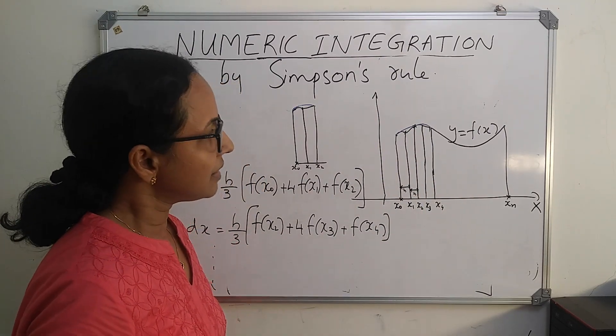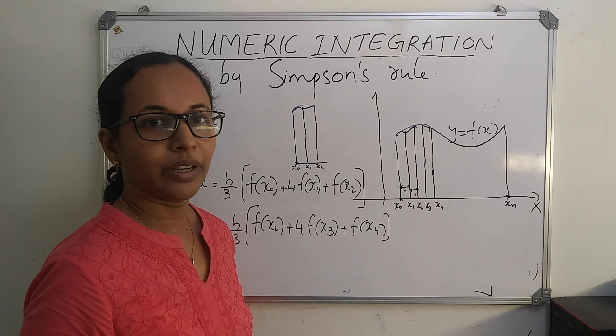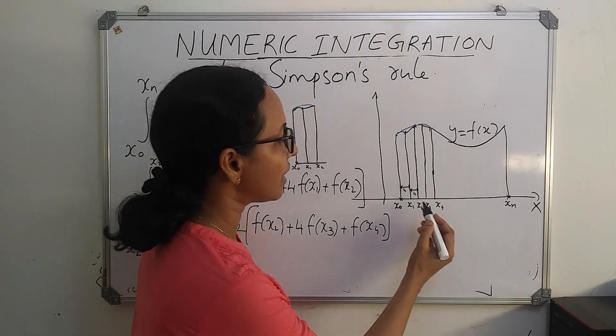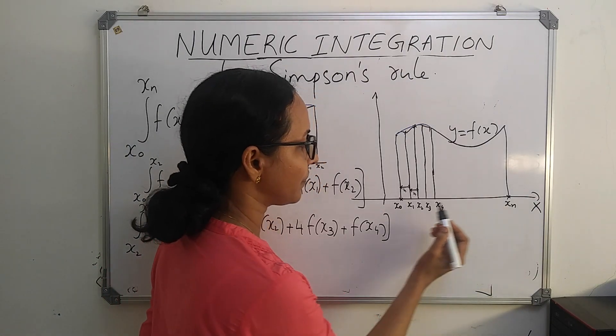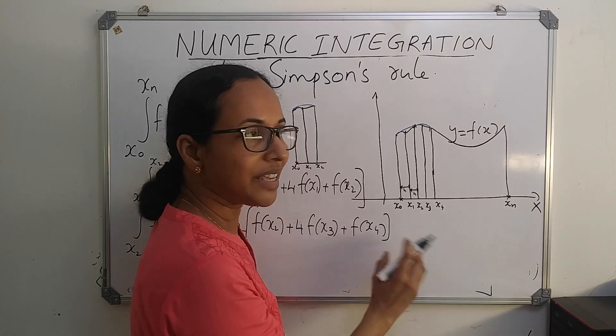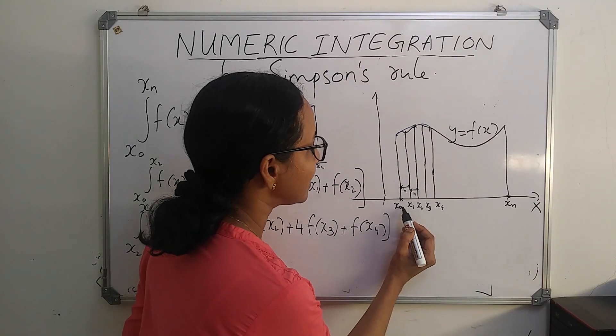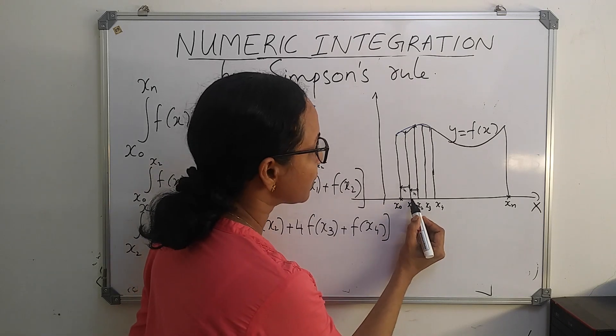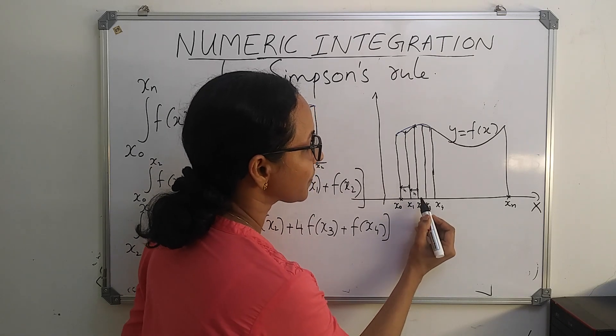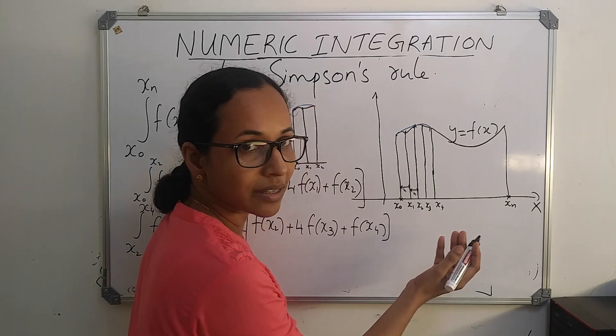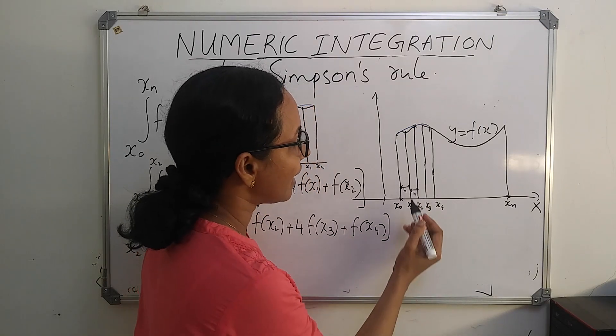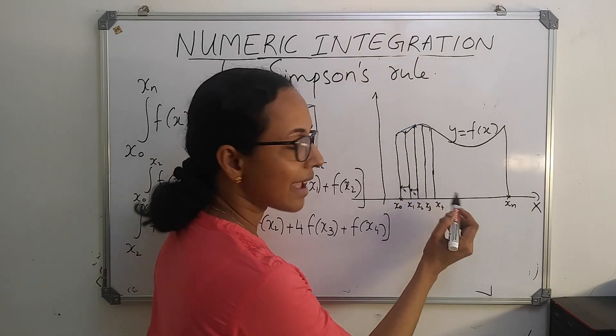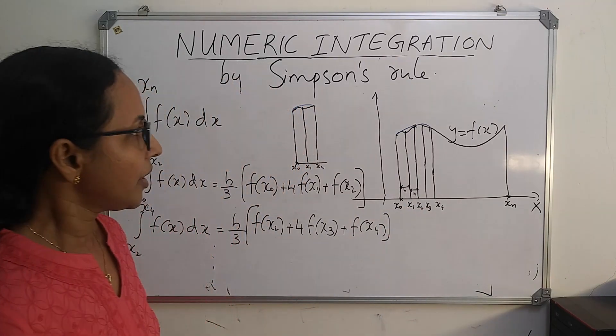As in the trapezoidal rule, here also, we will be dividing the interval x0 to xn into n equal subintervals. That is, x0 x1 first subinterval, x1 x2 next subinterval, x2 x3 next subinterval, and so on. Each subinterval has length h.